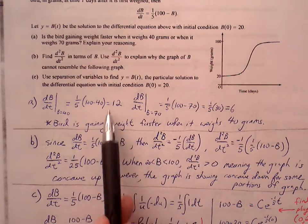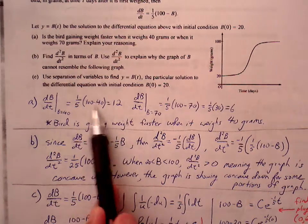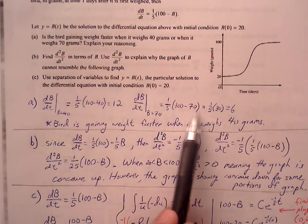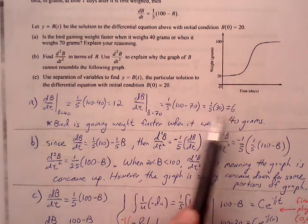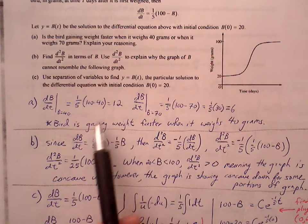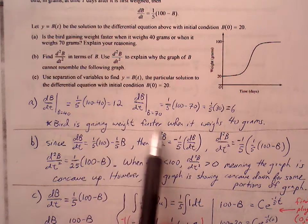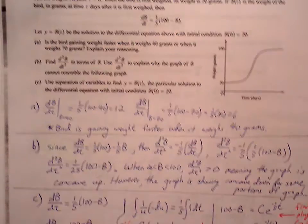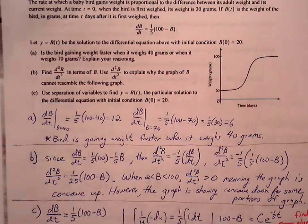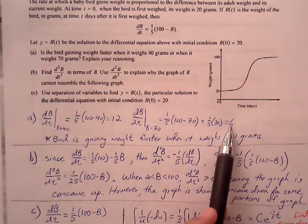We plug in 40 for the B value in dB/dt and we get 12. Plug in 70 for the B value and we get 6. Between 12 and 6, 12 is a larger value, so the bird is gaining weight faster when it weighs 40 grams because the bird's weight is changing at 12 grams per day as opposed to 6 grams per day.